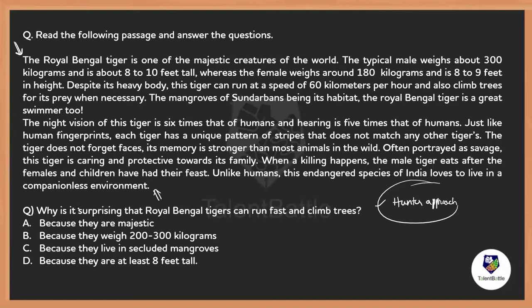In the hunter approach, we hunt for the question — we read the question first and never read the given data upfront. The question asks: 'Why is it surprising that Royal Bengal tigers can run fast and climb trees?' So I skim through the paragraph to find only where running fast and climbing trees are mentioned, rather than reading everything — that would be a waste of time.